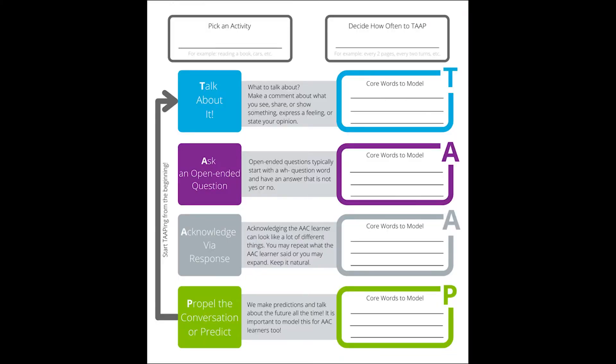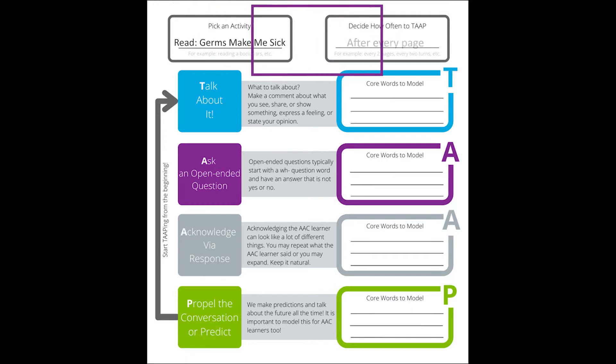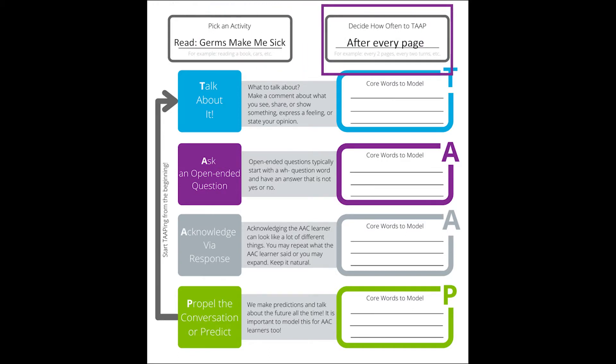Let's take a look at how to model these words and tap your way through the story. The first step to tap your way through is to pick an activity. We've already done that — we're reading the book Germs Make Me Sick. Next, you decide how often you will stop and tap. For this story, we suggest tapping after every page of the book.